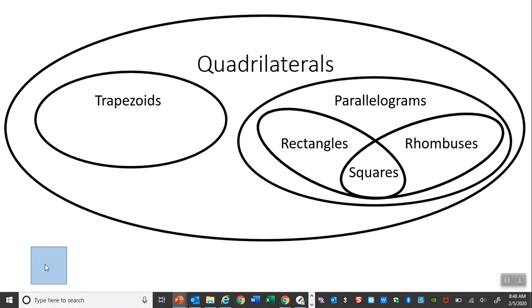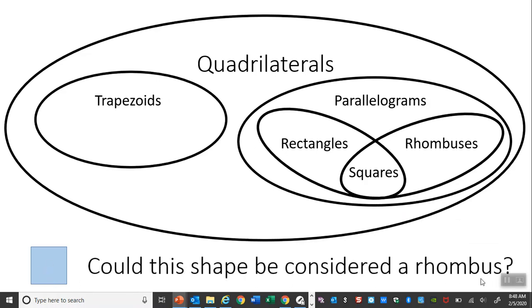So they give you a picture here, down here. And they're asking, could that shape be considered a rhombus? Well, hopefully you understand that this is a square. So I'm going to go ahead and put it over square. And if you look at the rhombus circle, it does fall in the rhombus circle. So a square is a rhombus. Yes.